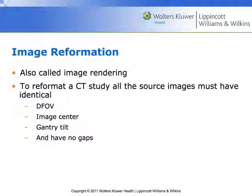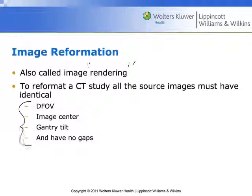That was image reconstruction. Now we're going to talk about image reformatting, which is totally different — sometimes some texts refer to it as image rendering. When we reformat a CT study, all of these things must be absolutely identical: they must have the same display field of view, the same isocenter or image center, the same gantry tilt, and there needs to be no gaps between the information. Sometimes if we're going to do really fancy reformats, we may need to do overlapping reconstruction prior to the reformat.